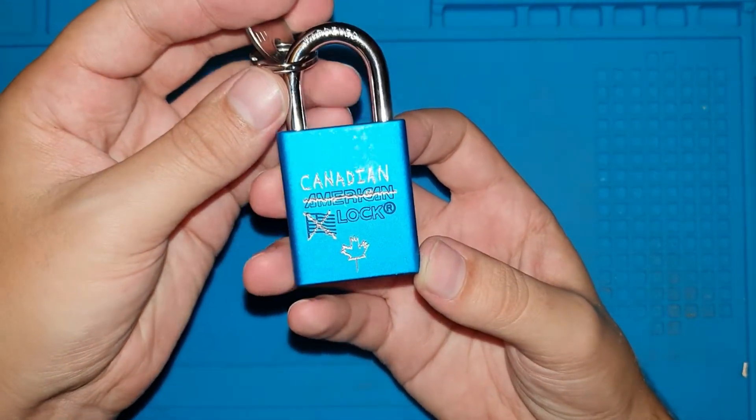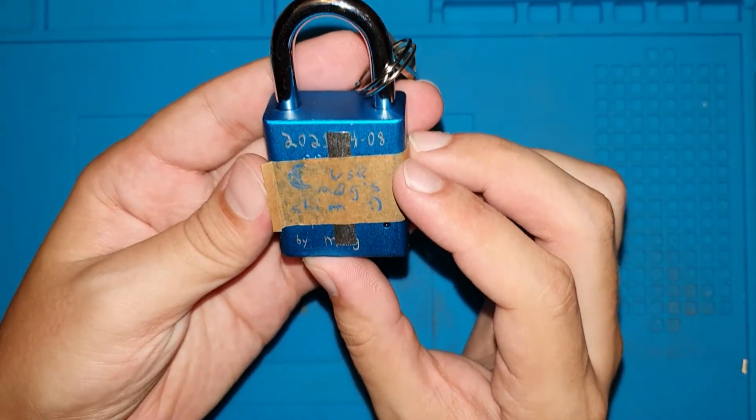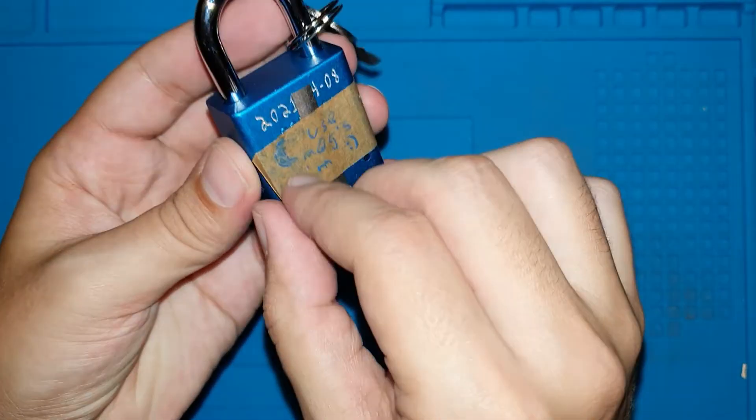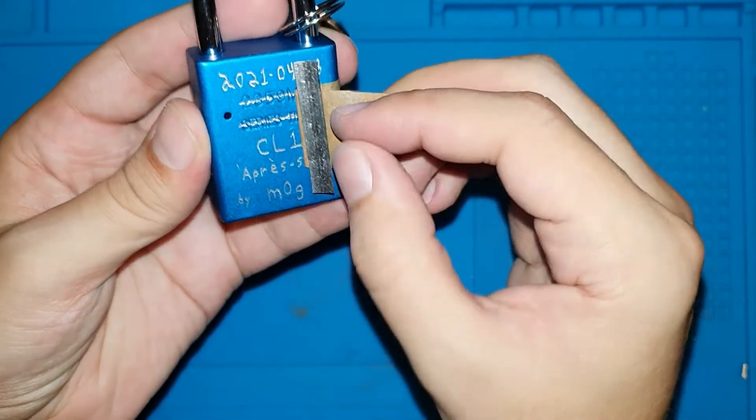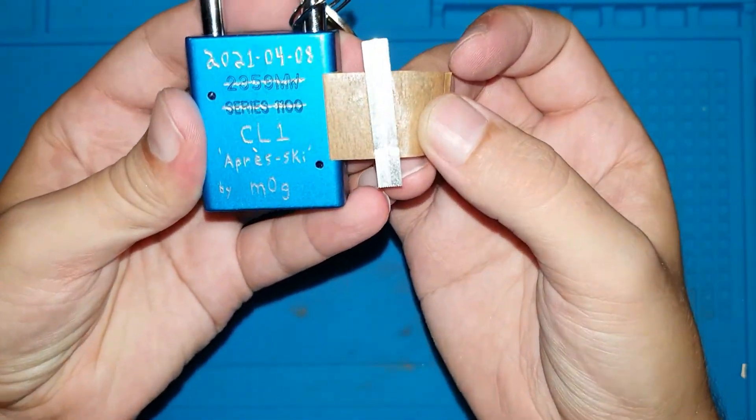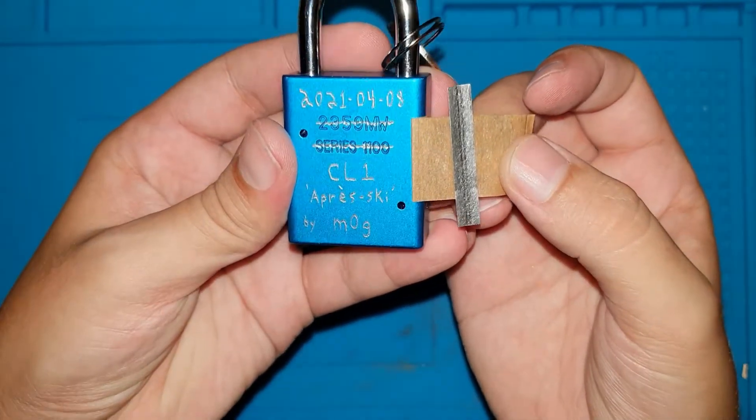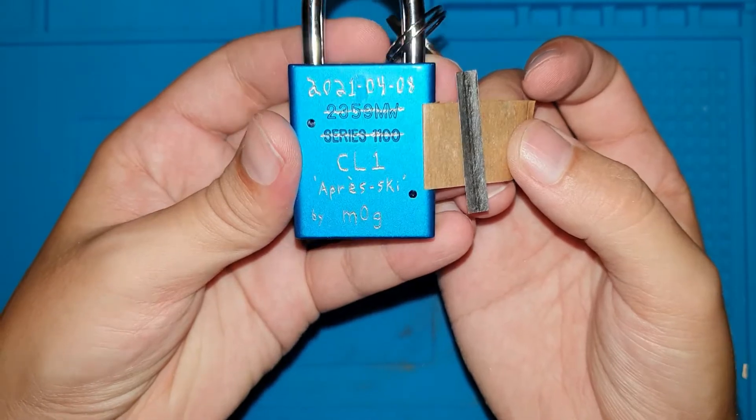This one was made by Mark. Mog put the shim here so that I would use it. I have to show the rest of the inscription, which is called Apre Ski from MOG.